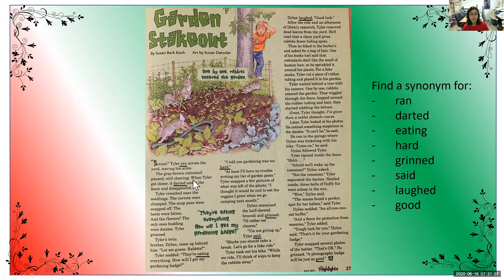What about: 'When Tyler got closer, it darted under the fence and disappeared.' Instead of saying darted, what else can we say? Maybe we could say hopped — 'it hopped under the fence and disappeared.' Or it dug under the fence. Those all have that same underlying meaning of the rabbit disappearing, so those could all be great synonyms.